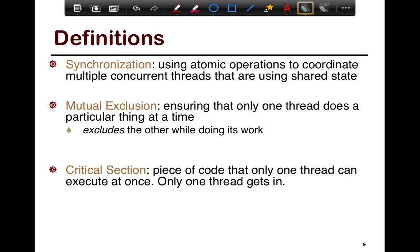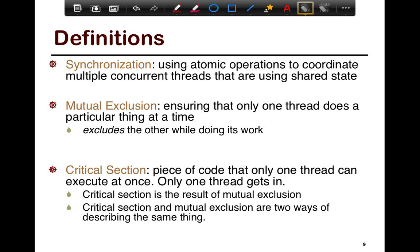Mutual exclusion ensures that only one thread does a particular thing at a time — the fact that you are running means the other thread is not running. This is useful in many cases where you make assumptions about shared state based on the fact that no one else could be running. A critical section is the piece of code that only one thread can execute at a time — it's the code that mutual exclusion protects. In Java, the 'synchronized' keyword makes the function it's applied to a critical section. Critical section and mutual exclusion are essentially two ways of describing the same concept.